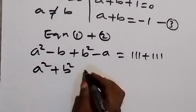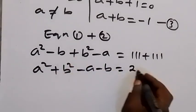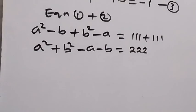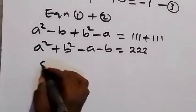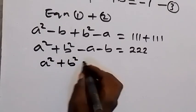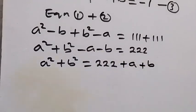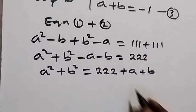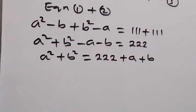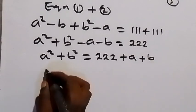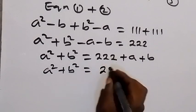So we have a² plus b² minus a minus b equals 2. Taking minus a minus b to the other side, this becomes a² plus b² equals 2 plus a plus b. We substitute equation 3, where a plus b equals minus 1, to get a² plus b² equals 2 plus (minus 1), which gives a² plus b² equals 1. Label this equation 4.